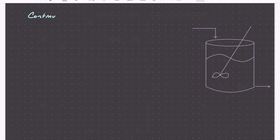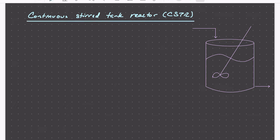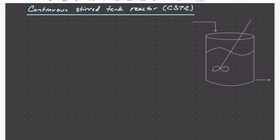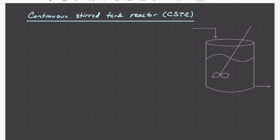The next reactor we look at is the continuous stirred tank reactor, or CSTR. This looks a little like the batch reactor, but we operate it continuously — with time we are adding species to the reactor and removing species from the reactor outlet.